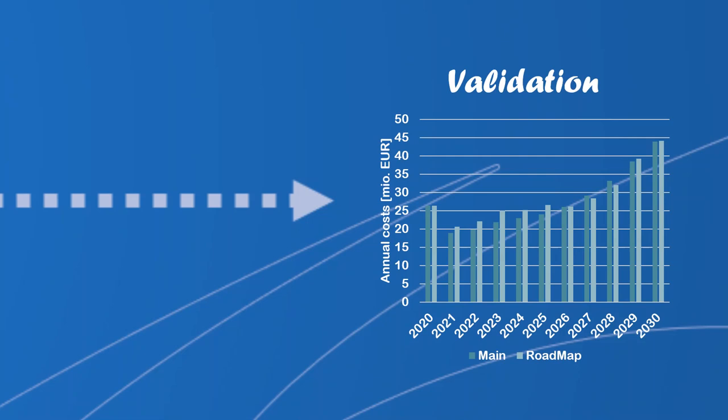The final step of the applied methodology is the validation. Two parameters are considered: first, the economics of the roadmap should be close to the optimal solution; and second, the criterion of 100% sustainable electricity production by 2030. The applied method resulted in a realistic and hands-on solution. This method can easily be applied to other systems, especially small systems, where it's easy to map out every relevant investment.